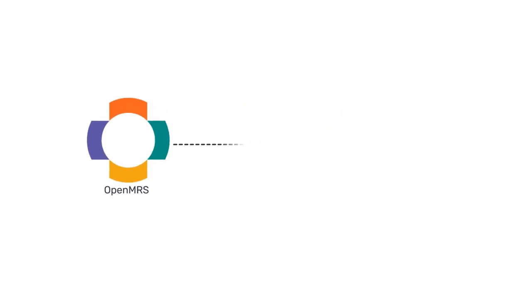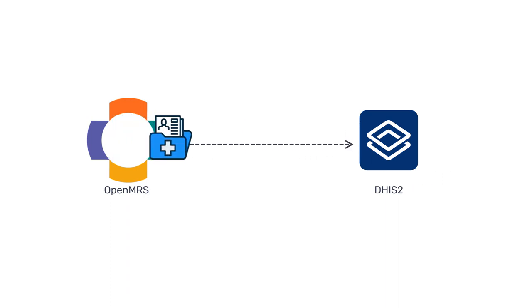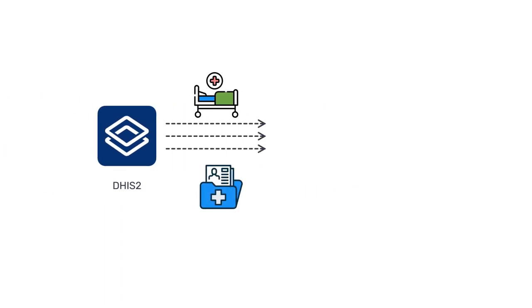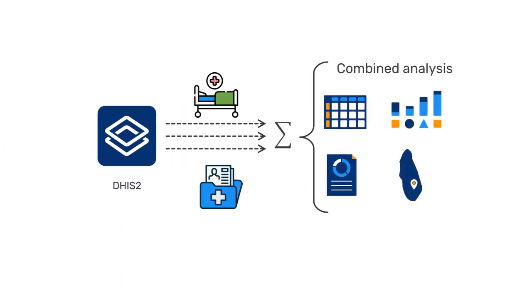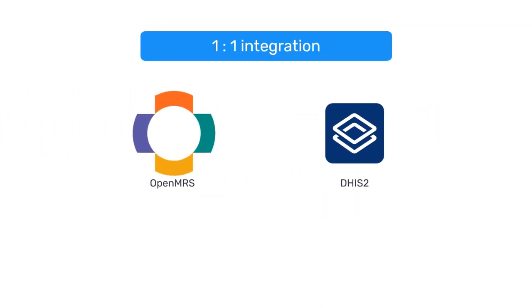Interoperability allows DHIS-2 to receive relevant data from OpenMRS, such as aggregate data on total hospital visits, services delivered, and patient outcomes, or tracker data on individual patients, and use them for analysis in combination with other data stored in DHIS-2. This is commonly referred to as a one-to-one integration, as you are linking one system directly to another.